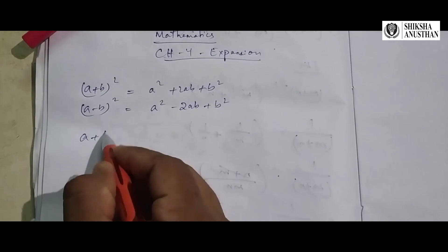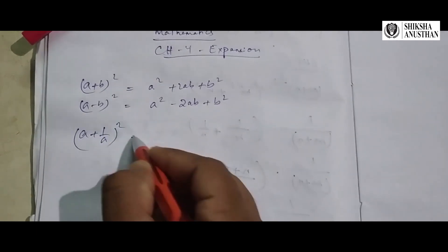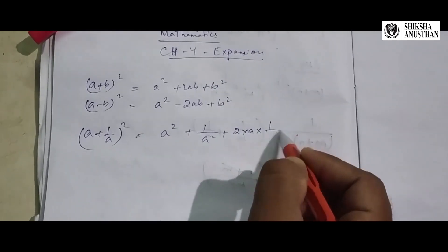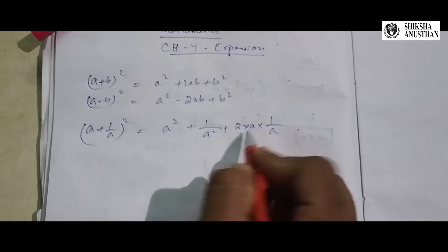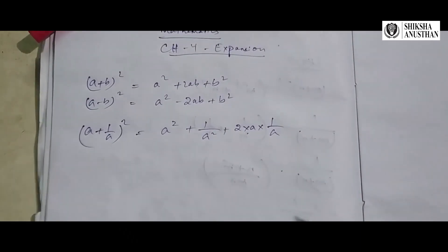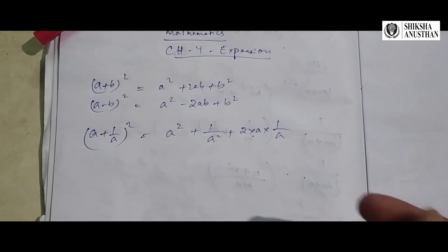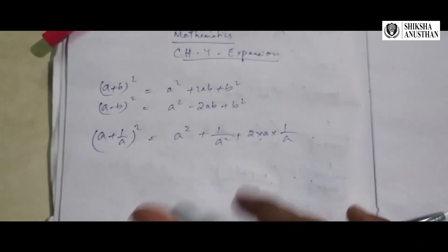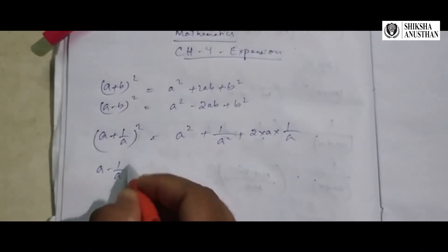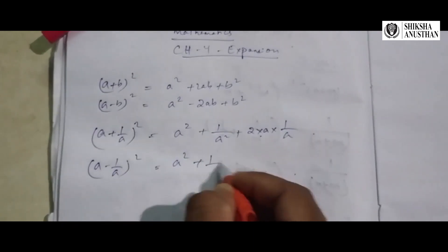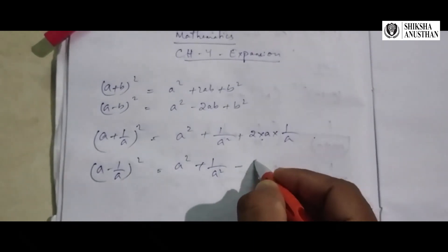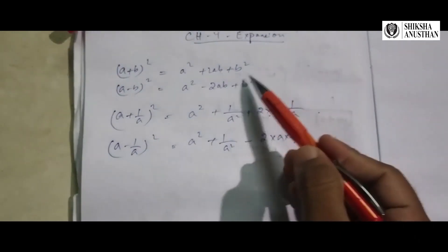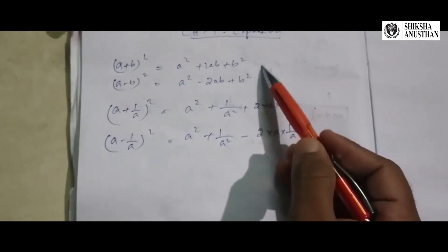Now, if there is a fraction: (a + 1/a) whole square goes like a square plus 1 by a square plus 2 into a into 1/a. This can be cancelled out, but in some questions it may not be cancelled, so you need to work it out. In the standard formula it simplifies to 2. Similarly, (a - 1/a) whole square equals a square plus 1 by a square minus 2 into a into 1/a.